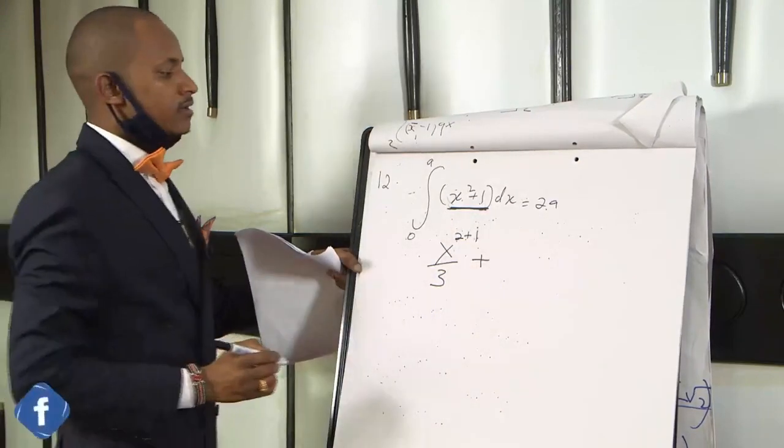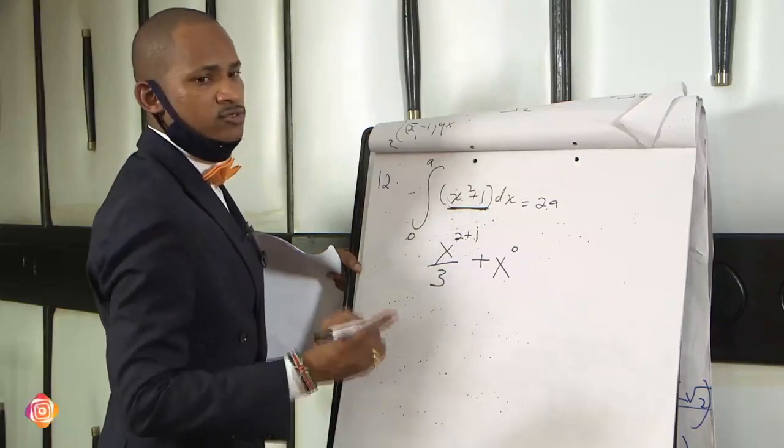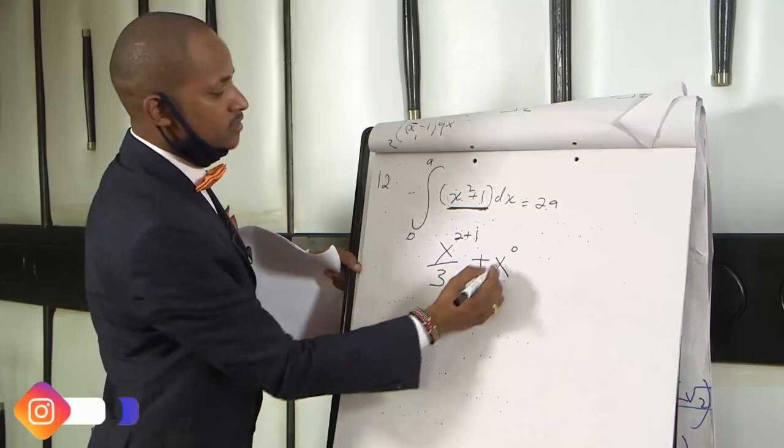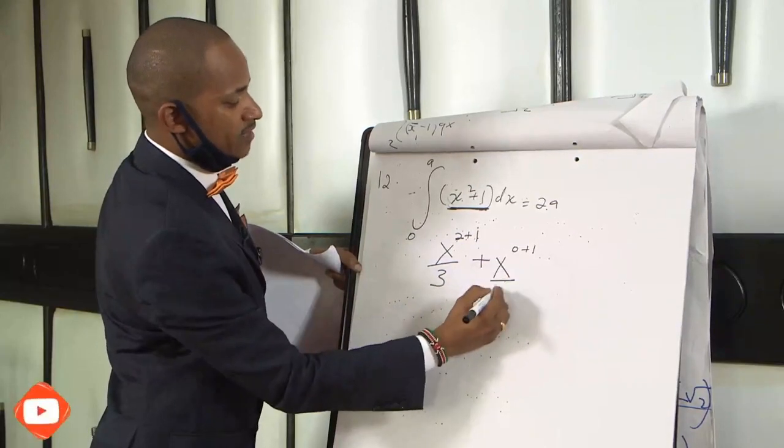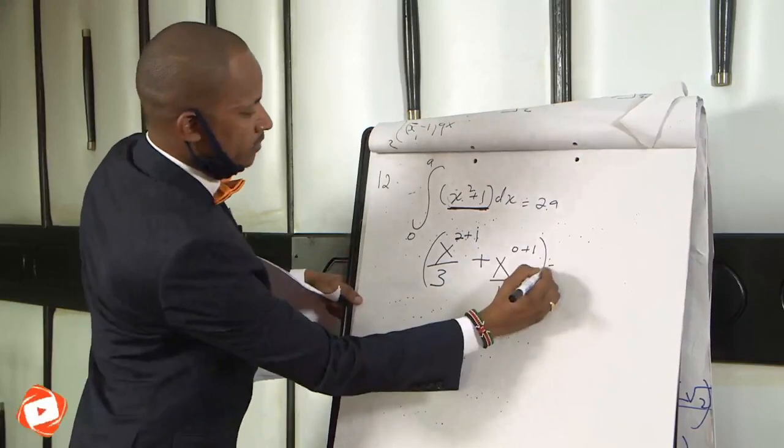Plus here we have x raised to power 0. I told you any number raised to power 0 is 1. Any letter raised to power 0 is 1. So x raised to power 0 plus 1 divided by 1.